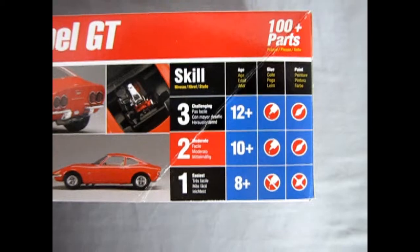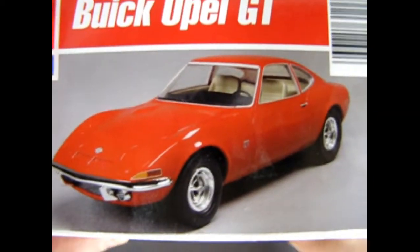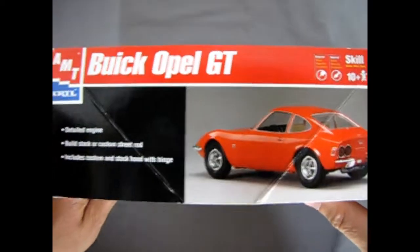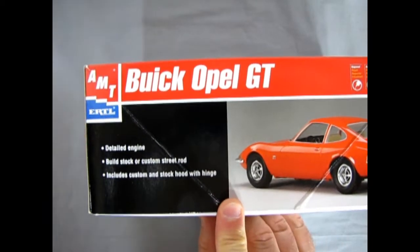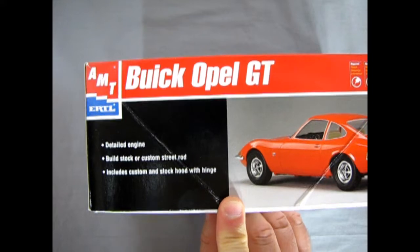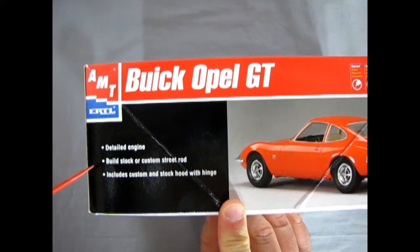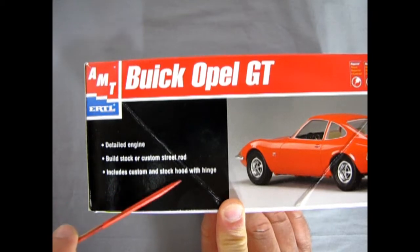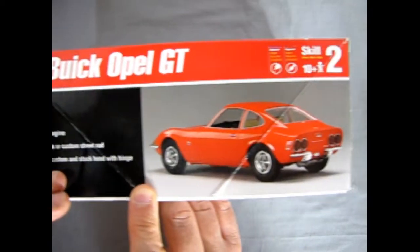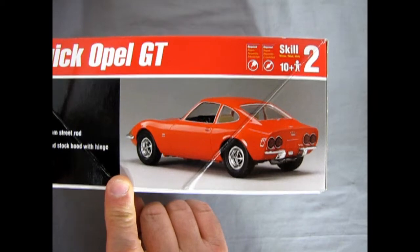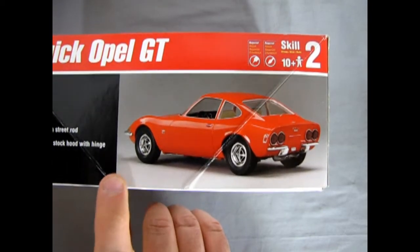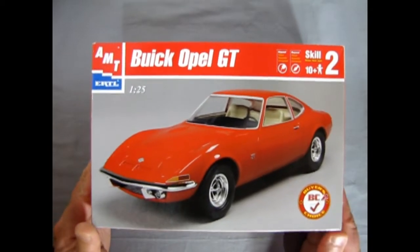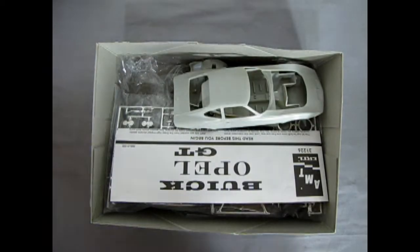There of course is the little Opel GT motor. This is a skill level 2 kit for ages 10 and up will require some glue and paint. 100 plus parts so quite detailed. On this side we have some special features called out. Basically a detailed engine you can build this stock or custom street rod. Includes custom and stock hood with hinge and then there we have the awesome image of the back of the Opel GT.